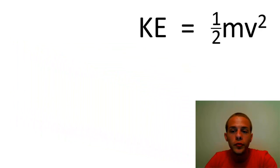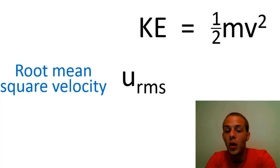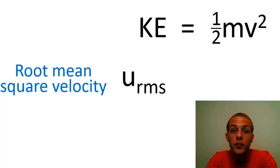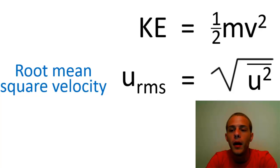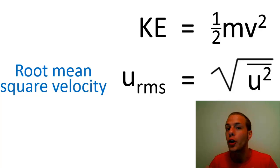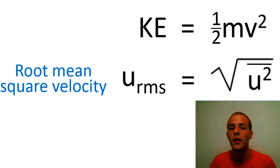At this point it's useful to introduce the root mean square velocity, given the symbol U sub RMS. RMS stands for root mean square — it's basically a special type of average that we can easily derive an expression for using things that are very measurable. The root mean square velocity equals the square root of U-squared-bar, where that bar above U-squared means we take all the particle speeds, square them, and then take the average of those squares.